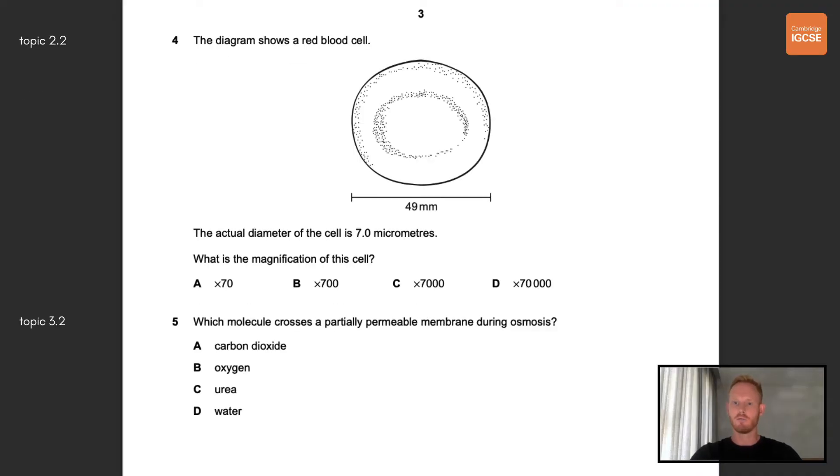Number four, the diagram shows a red blood cell. The actual diameter of the cell is seven micrometers. What is the magnification of this cell? The first thing is to convert one of the measurements so that we have the same units for each. There are 1000 micrometers in a millimeter. We then simply enter our values into the equation, magnification equals image size divided by actual size, which gives us a magnification of 7000. The correct answer is C.